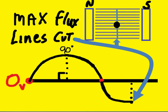Maximum flux lines are now cut as it continues counterclockwise, and now maximum voltage is induced — of course, in the opposite direction as before.